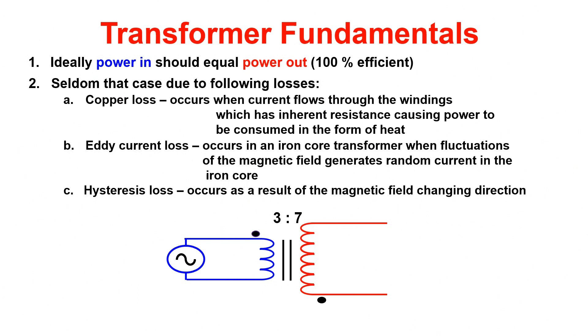Copper loss occurs when current flows through the windings, which have inherent resistance, causing power to be consumed in the form of heat. What are the windings made out of? If you guessed copper, you'd be right.